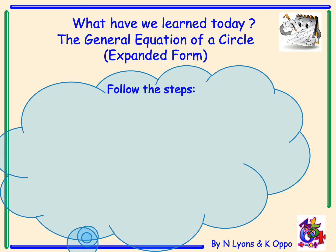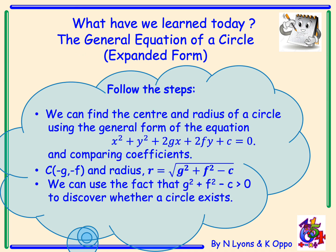So what have we learned today? We've learned about the general equation of a circle in its expanded form. We can find the centre and radius using the general form by comparing coefficients. The centre is negative g, negative f. The radius is the square root of g squared plus f squared minus c. And we must remember that for a circle to exist, g squared plus f squared minus c must be greater than 0.